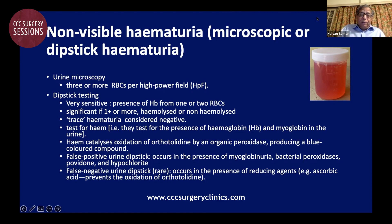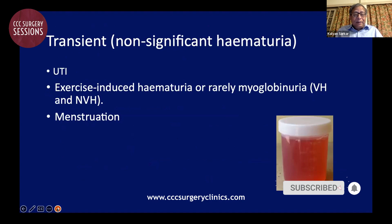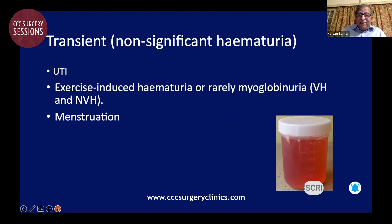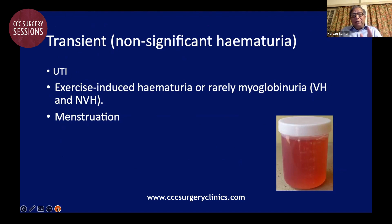Trace hematuria on the dipstick test should be considered negative. The test is also positive in cases of myoglobinuria. Dipstick hematuria has become extremely sensitive and almost as dependable as microscopic hematuria. Before interpreting dipstick hematuria, one should exclude transient or non-significant hematuria, which could be due to a urinary tract infection, exercise-induced hematuria, myoglobinuria, menstrual contamination, or sexual intercourse.